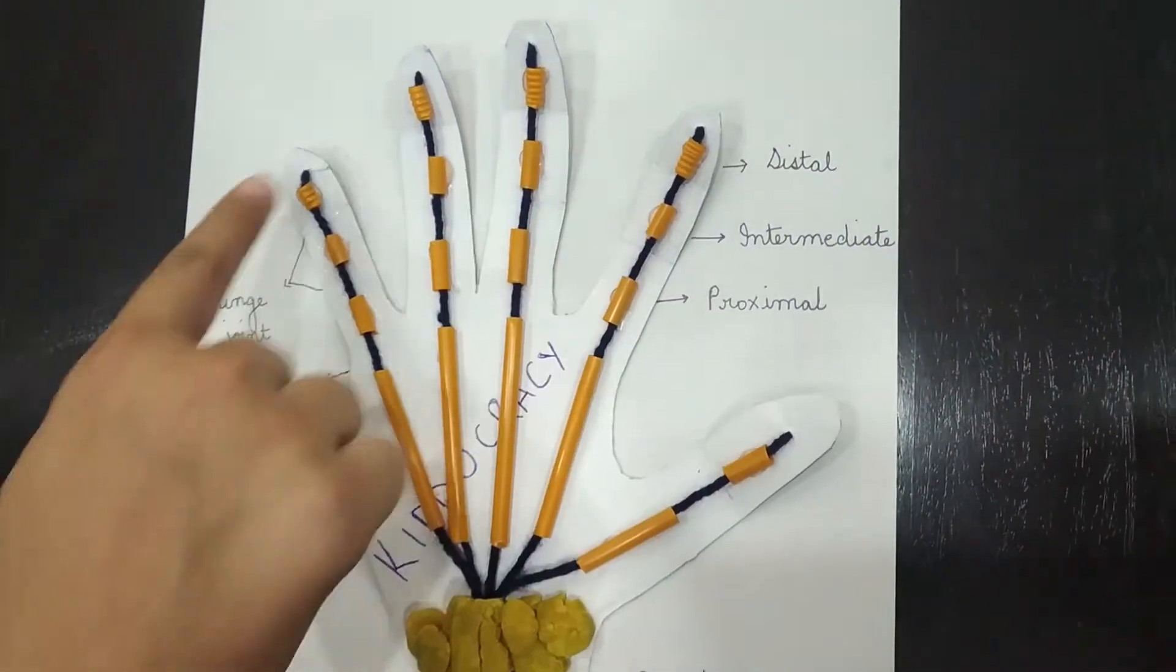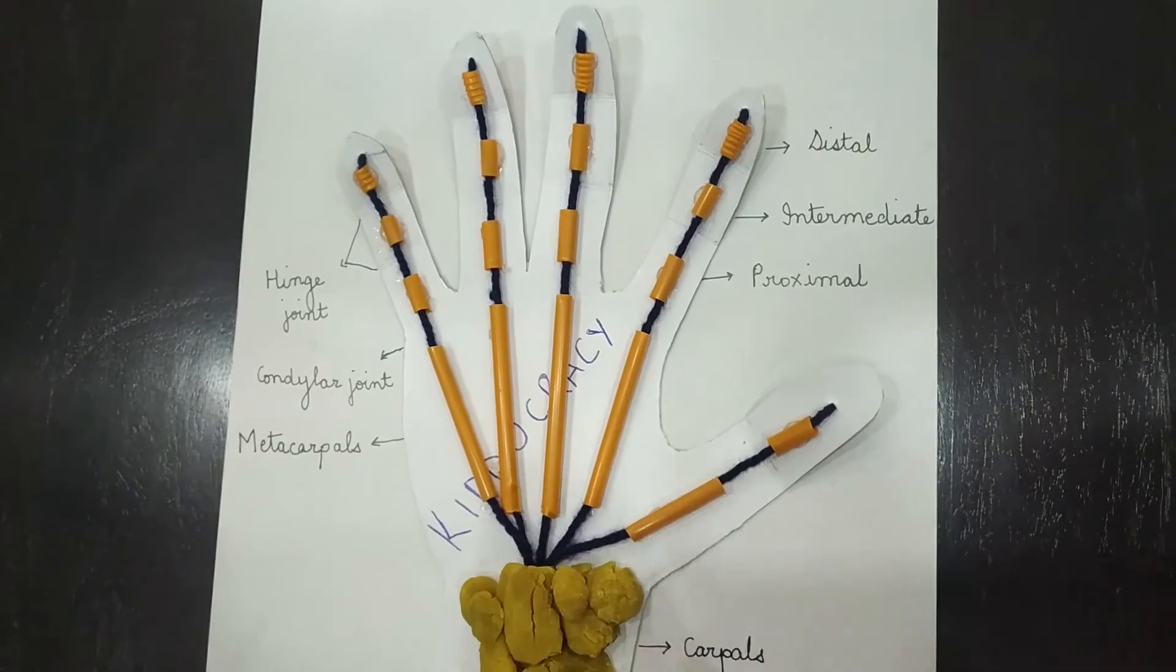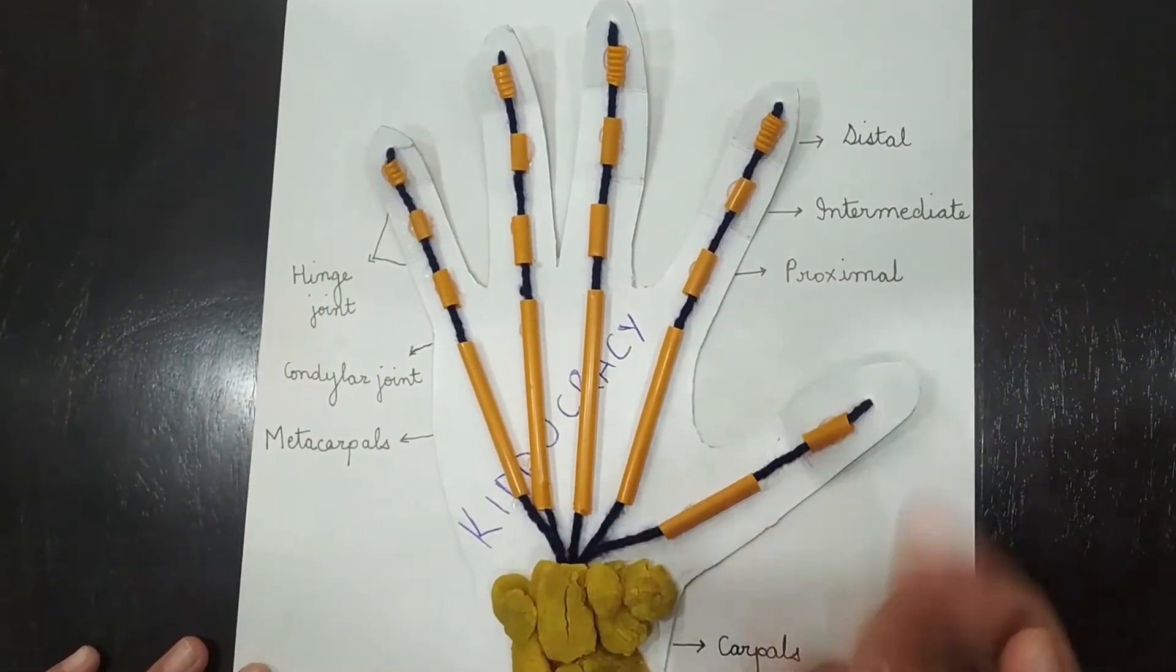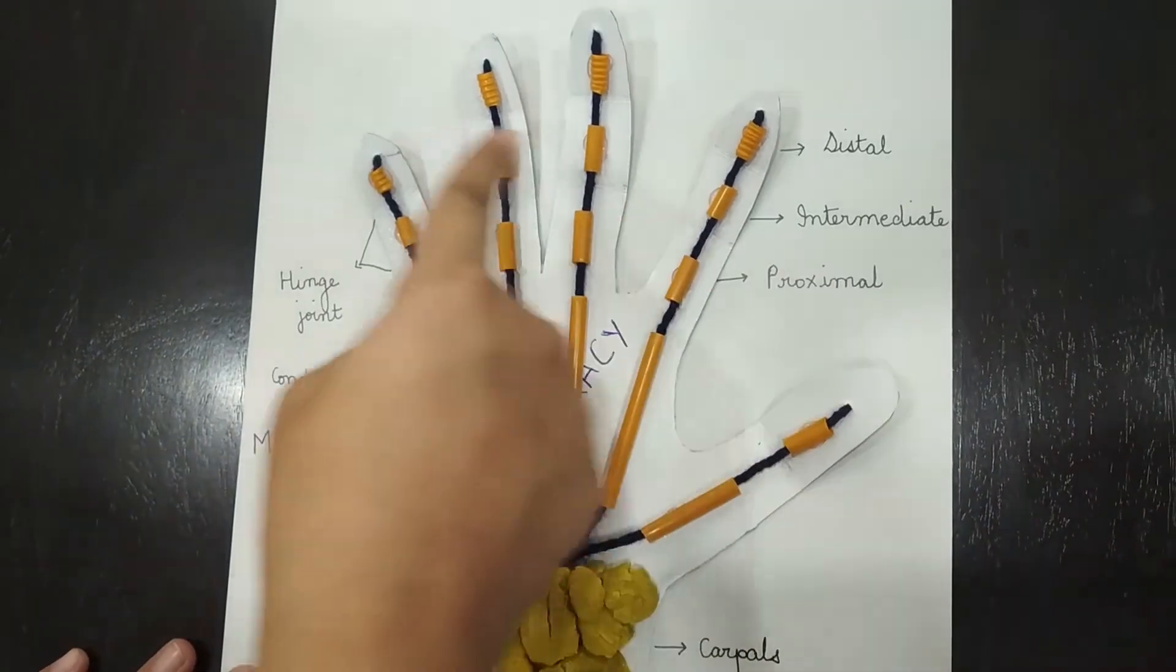The thumb along with the four fingers are together known as digits. These represent the bones known as phalanges. There are three phalanges in each finger.